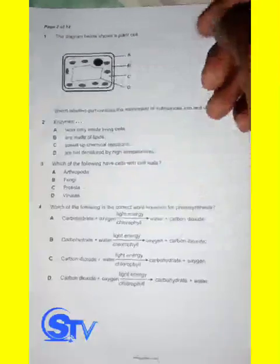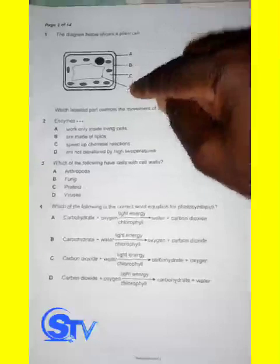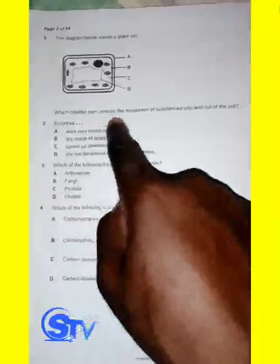These are the structures of a plant cell. We have structure A, structure B, structure C, and structure D. The question asks which labeled part controls the movement of substances into and out of the cell.